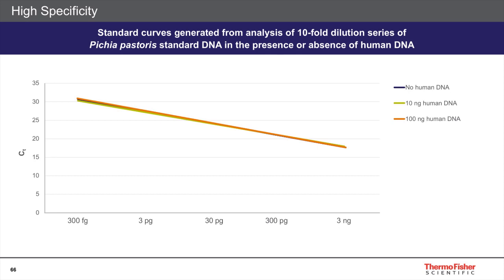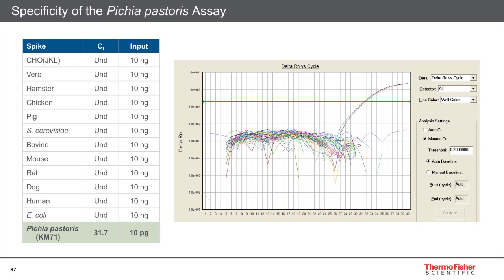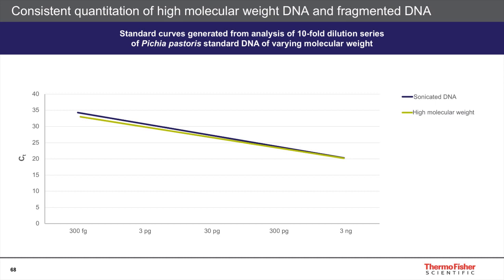The assay is also very specific. Across a range of concentrations from 300 femtograms up to 3 nanograms, we have good consistent performance even in the presence of spiked unrelated DNA — specifically human DNA at 0, 10 nanograms, and 100 nanograms. That specificity holds across a range of possible DNA contaminants. We also get good consistent performance across a range of concentrations not only for high molecular weight DNA, but also for DNA that's been exposed to sonication and therefore fragmented to lower molecular weight.